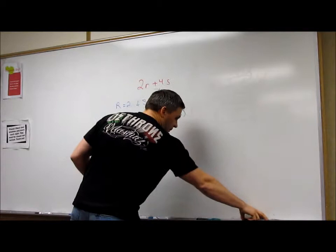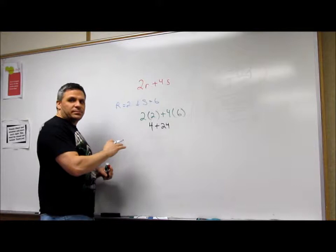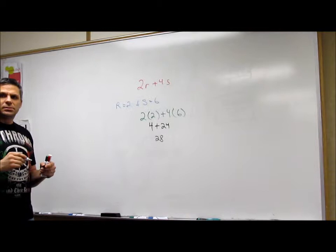So 2 times 2 is 4. Times 2 is 4. And 4 times 6 is 24. And then we add them and we get 28 again.